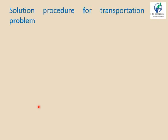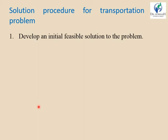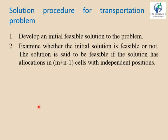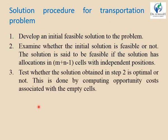The Solution Procedure for the Transportation Problem has three steps. First, develop an initial basic feasible solution that satisfies all constraints. Second, examine whether the initial solution is feasible — it is feasible if the allocation is in m + n − 1 cells with independent positions. Third, test whether the solution obtained is optimal or not, using appropriate methods.